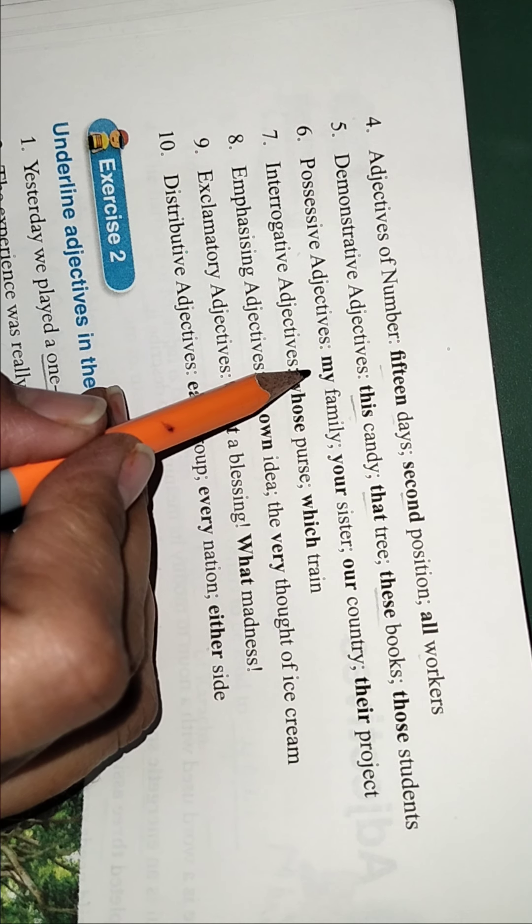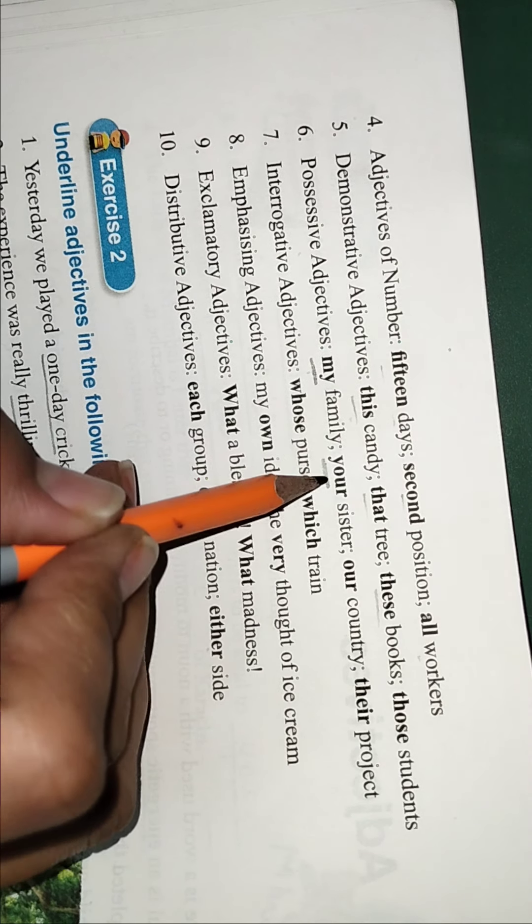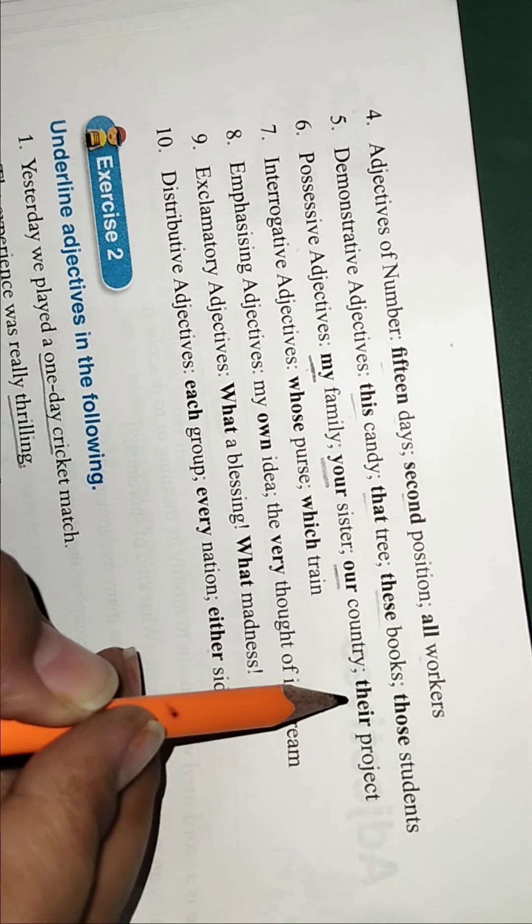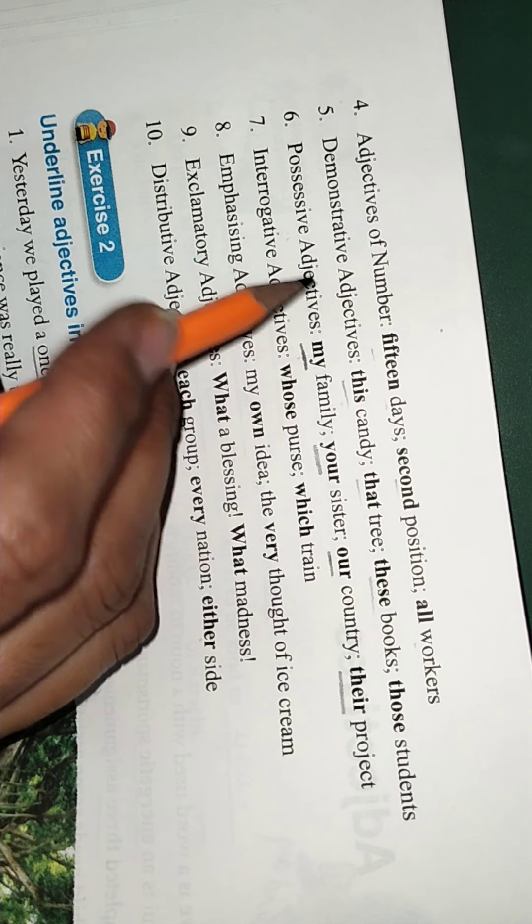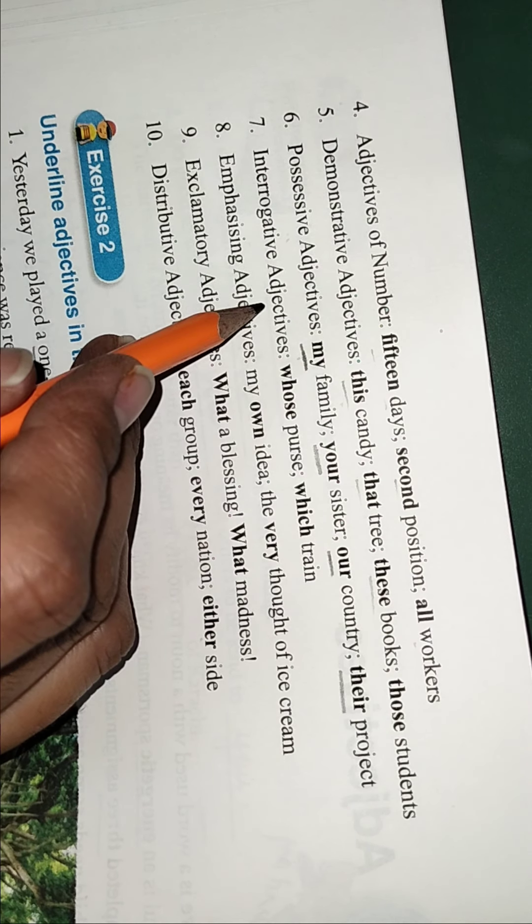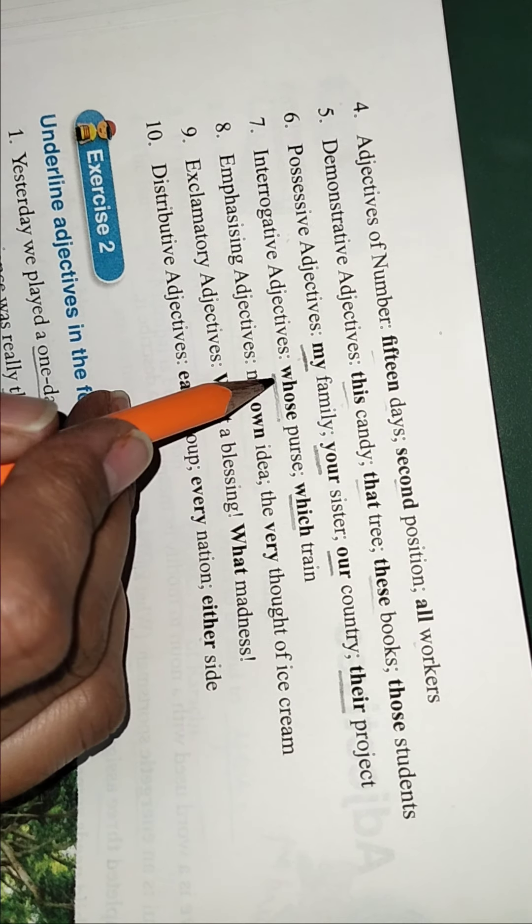This candy or that tree or those boys, these books. Then it is going to show them, all these are called the demonstrators. Possessive that shows the possession - my family, your sister, our country, their project. So the words like this show the possession.